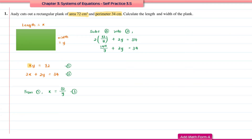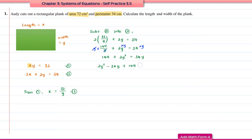Now I'm going to multiply each term by y to eliminate the denominator. The y cancels, giving 144 + 2y² = 34y. This is a quadratic equation. Rearranging into general form: 2y² − 34y + 144 = 0. Dividing every term by 2, we get y² − 17y + 72 = 0.